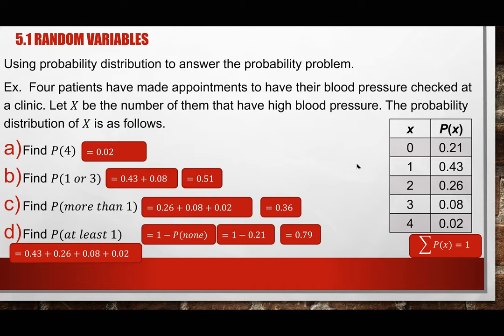Reminder: your probability answer will never be bigger than 1. So when you do the calculation, if you get something bigger than 1, you did something wrong. This example shows how to use a given probability distribution to find the probability for each criteria they ask.